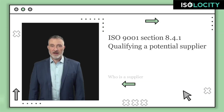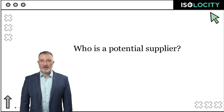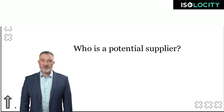A supplier is anyone from whom your organization receives goods or services. This includes every individual, business, and other entity that provides material, equipment, or labor to your company. Any company that has the potential of providing goods and services for your organization should be considered as a potential supplier, regardless of whether they have been contacted by you or not.